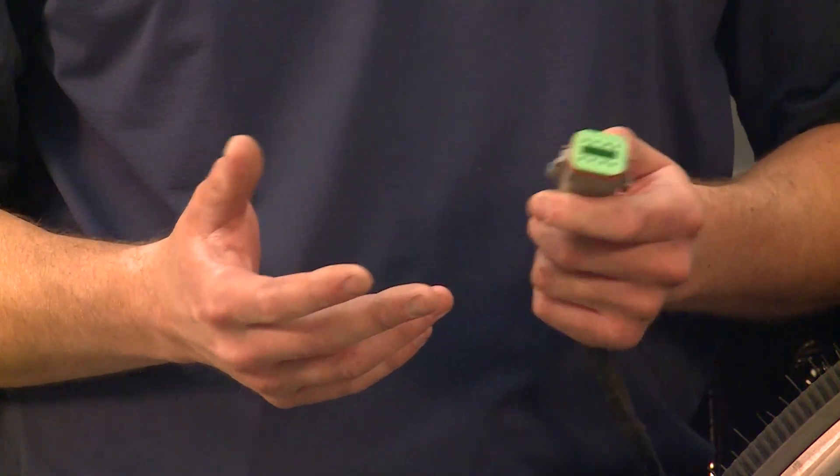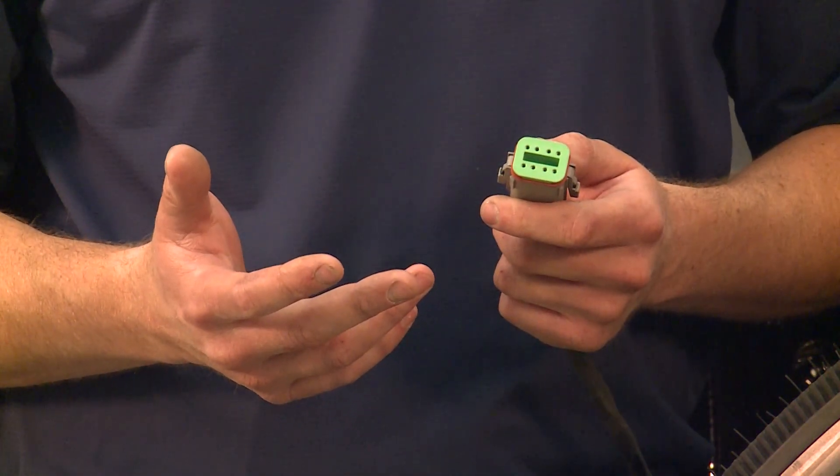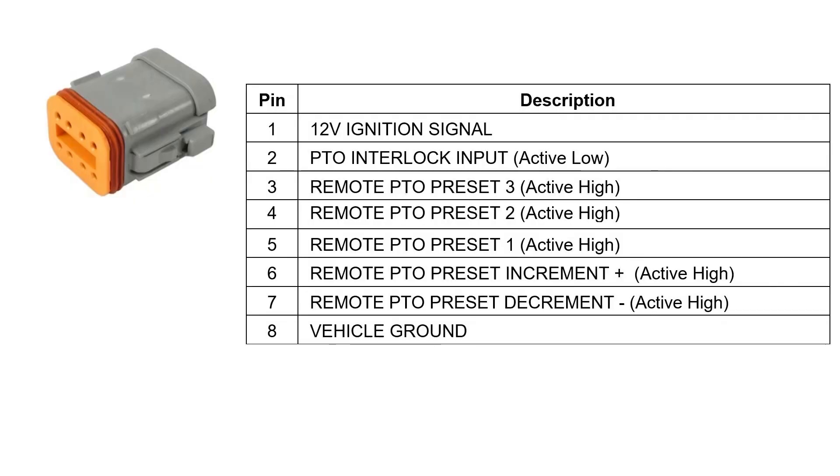Remote presets and interlocks are controlled through the optional 8-pin connector, which can be located under the hood, back of cab, or at the end of frame depending on how the truck is configured. The diagram on the screen shows the pinout for the 8-pin connector.